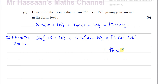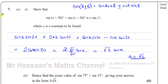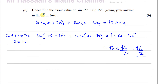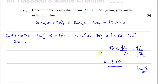The sine of 45 degrees is root 2 over 2, so root 3 times root 2 over 2 = root 6 over 2. The question says to give the answer in the form b root 6, so we write this as one half times root 6, and b equals one half. That's the answer to part 2, completing question a.